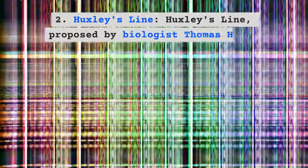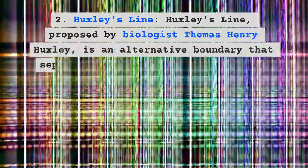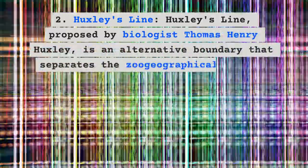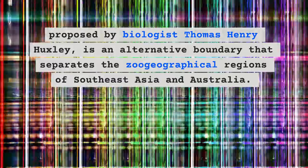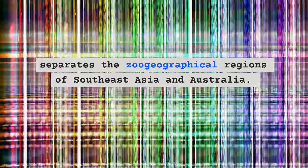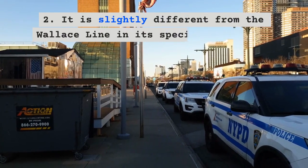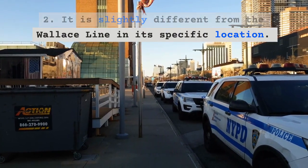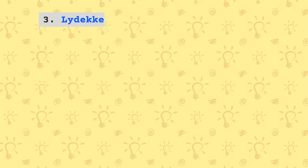Huxley's Line, proposed by biologist Thomas Henry Huxley, is an alternative boundary that separates the zoogeographical regions of Southeast Asia and Australia. It is slightly different from the Wallace Line in its specific location.